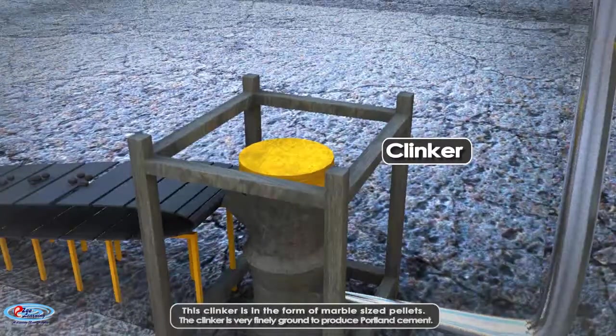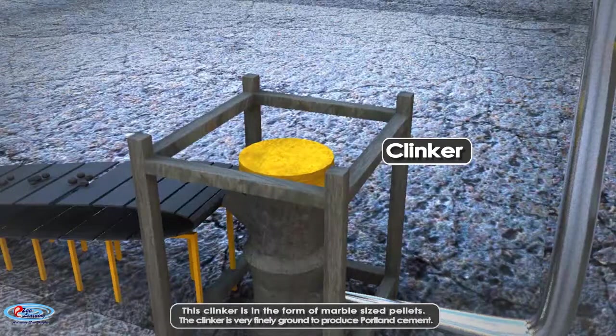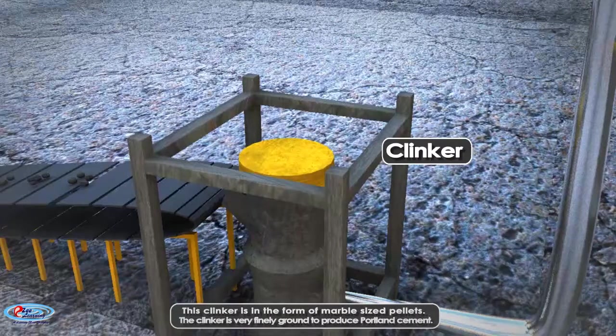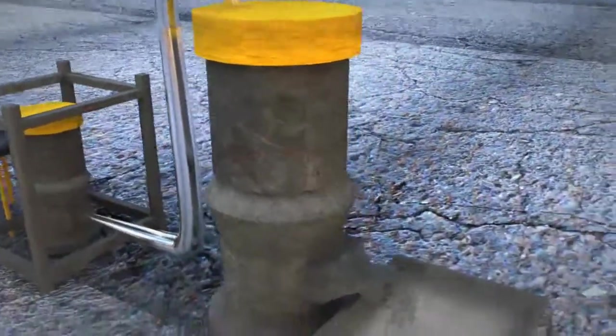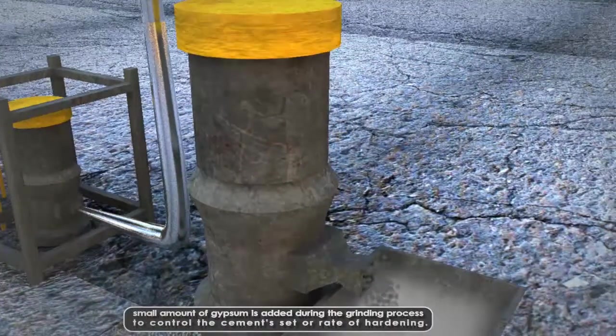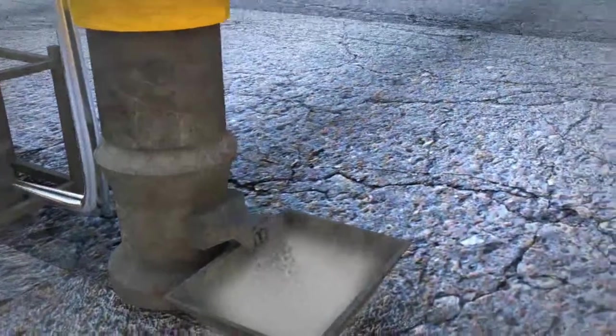This clinker is in the form of marble-sized pellets. The clinker is very finely ground to produce Portland cement. A small amount of gypsum is added during the grinding process to control the cement's setting and hardening.